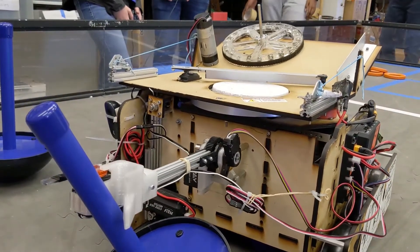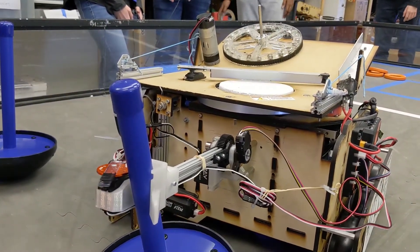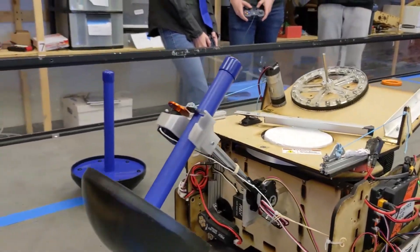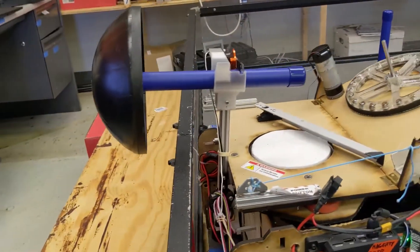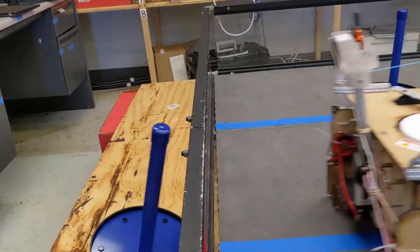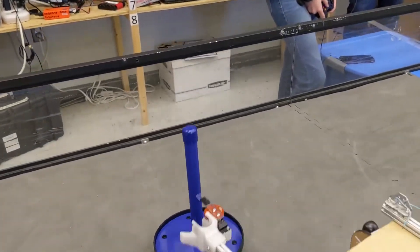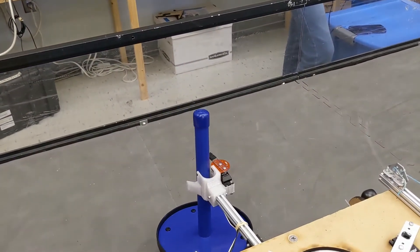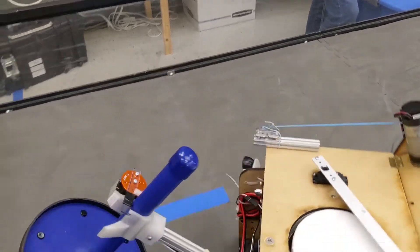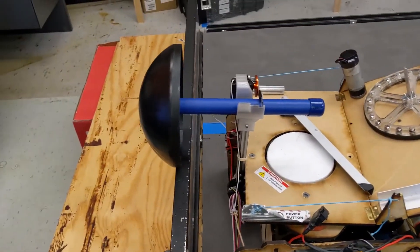The wobble goal mechanism is mounted at the back of the robot and utilizes two servos. The first servo is used to move the arm and lift the wobble goal, and it is geared down so that it can handle more weight. The second servo is at the end of the arm, and it helps us grab the wobble goal. There is a small funnel on the grabber that makes it easier to line up with.